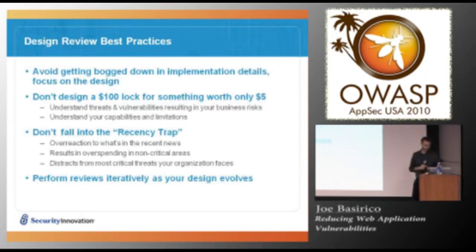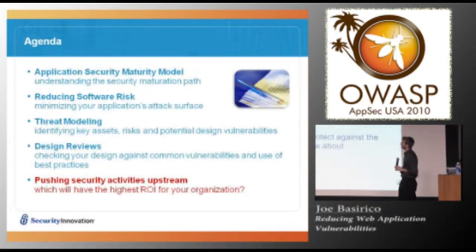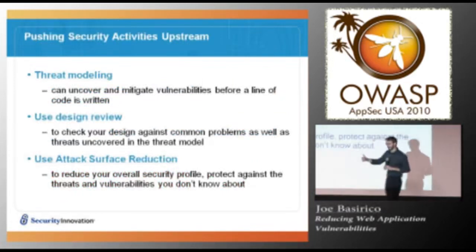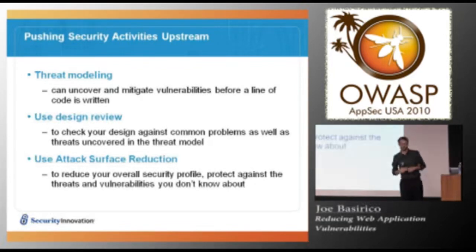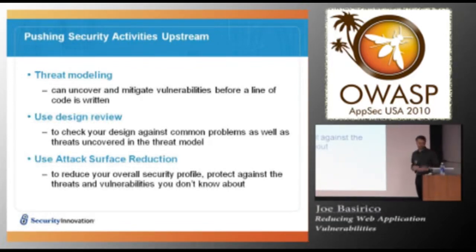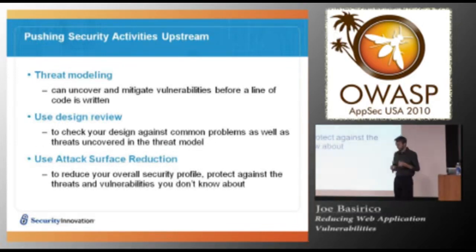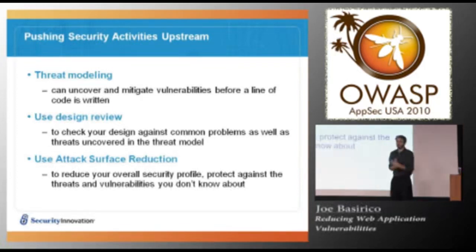We're going to talk about pushing security activities upstream — threat modeling, design review, and attack surface reduction — in order to reduce the overall security profile of our system. With threat modeling, we start to uncover vulnerabilities before they even happen. One of the neat things about threat modeling is that we can do it so early there may not be any code yet, but we can still anticipate and mitigate vulnerabilities.